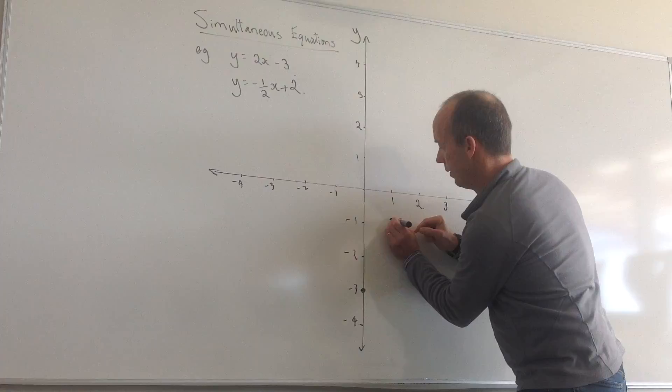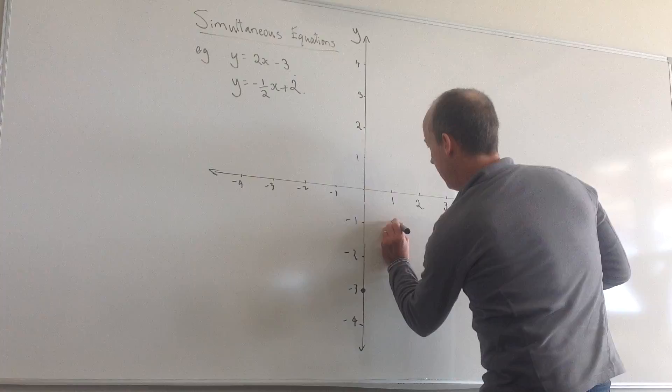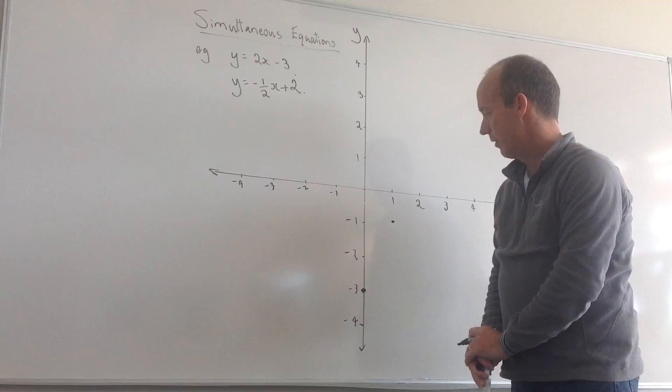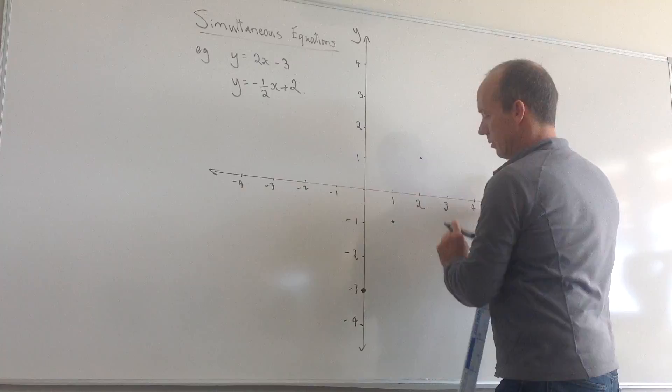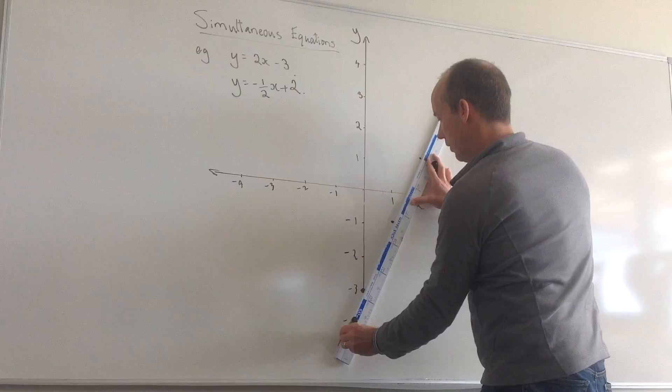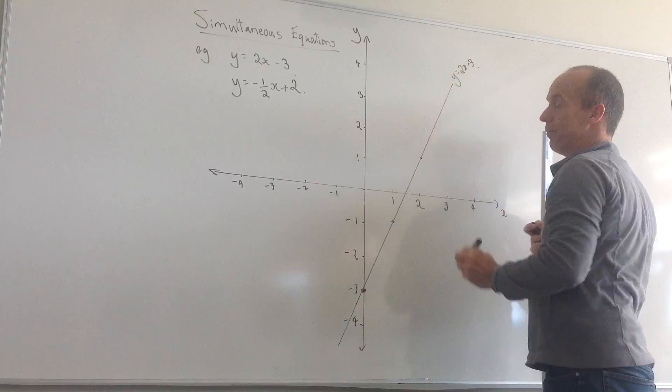It's important when you're solving simultaneous equations graphically that you get your points really accurate. Any little mistake will mean you end up with a mistake in your answer. I could do another point by going across 1 and up 2. If I've done those accurately, they should all fall on the same straight line. That's my equation for y equals 2x minus 3.